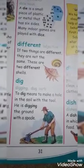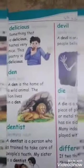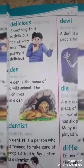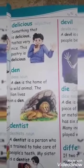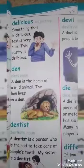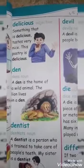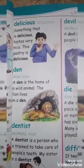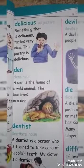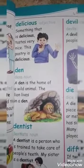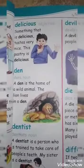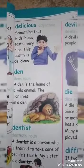Now come to page number 31. Our third word is 'den.' D-E-N. A den is the home of a wild animal. Den is a wild animal's home. The lion lives in a den.